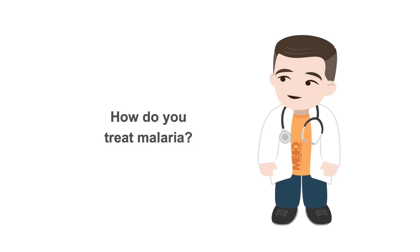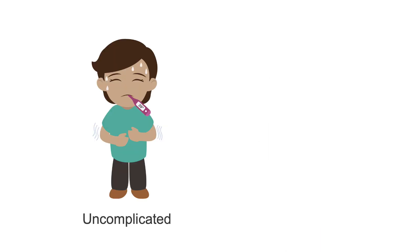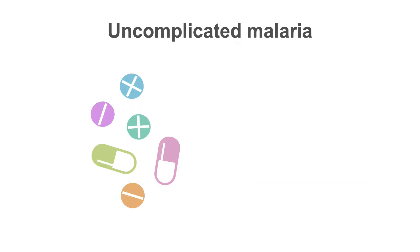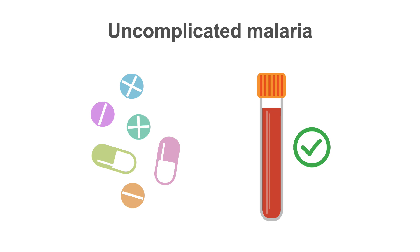Now that we know how malaria develops and how to recognize the symptoms, how do we treat this disease? Patients diagnosed with malaria are generally categorized as having either uncomplicated or severe malaria. Patients diagnosed with uncomplicated malaria can be effectively treated with oral anti-malarials. It is preferable that treatment not be initiated until the diagnosis has been established by laboratory testing.